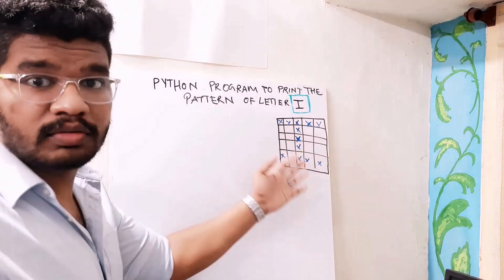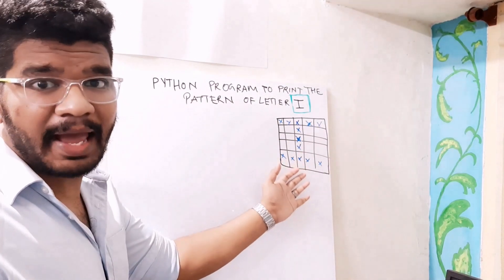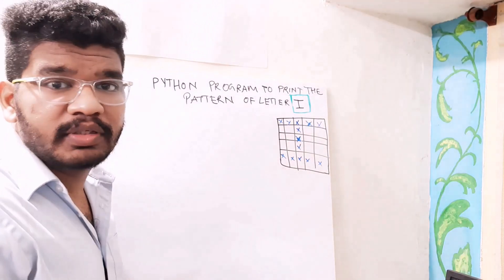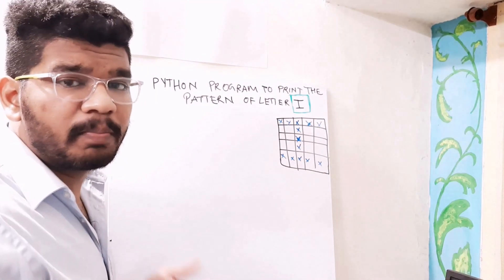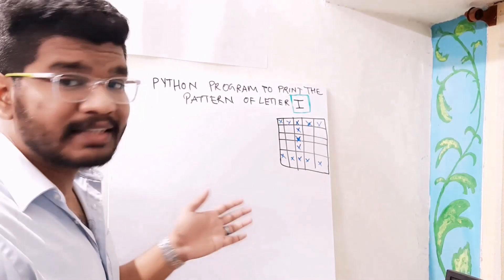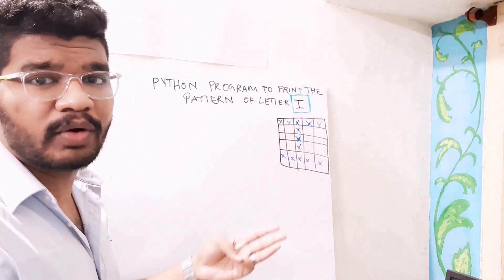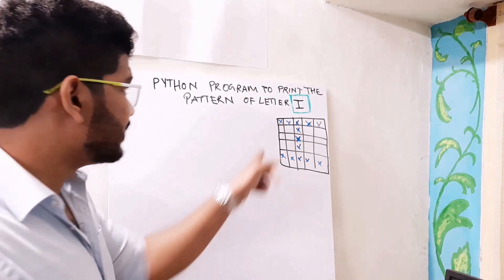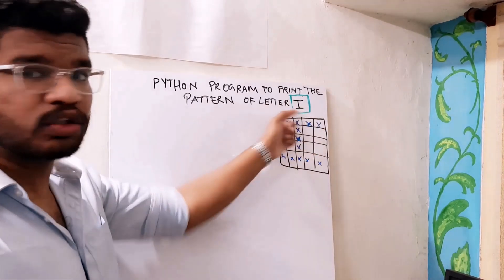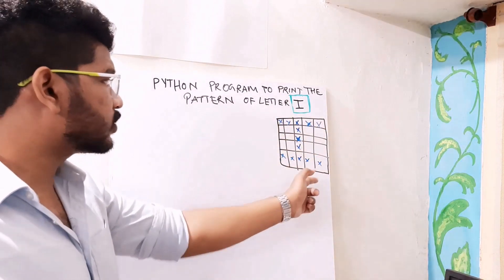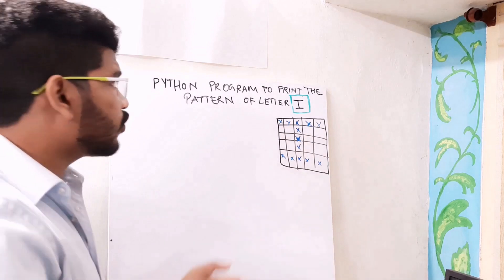This is the pattern I am going to print. As usual, like in all other previous programs, I will print stars and spaces based on some conditions. There are three locations where I need to print stars: the first row, the last row, and the middle column. Just like the inverse of H.